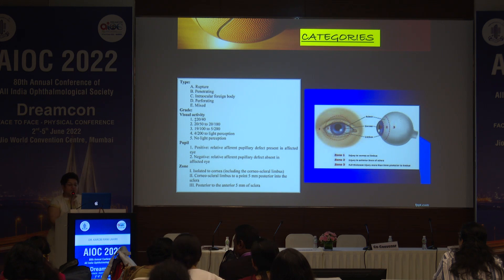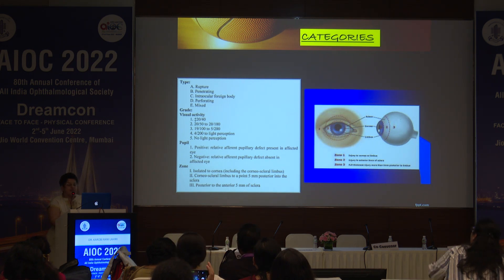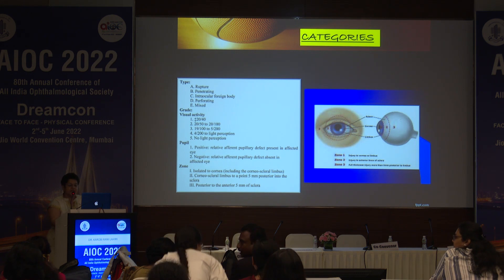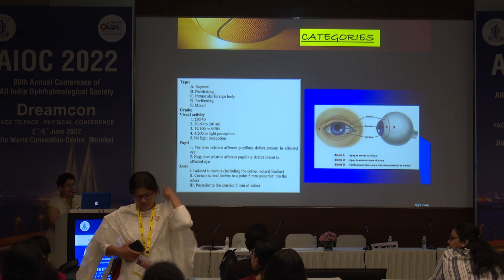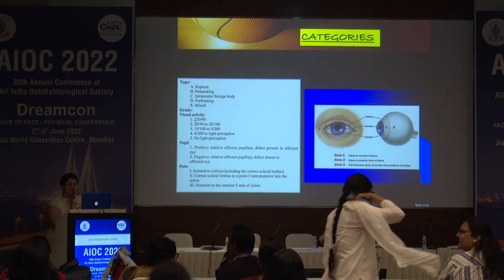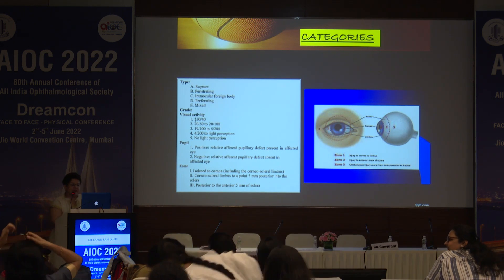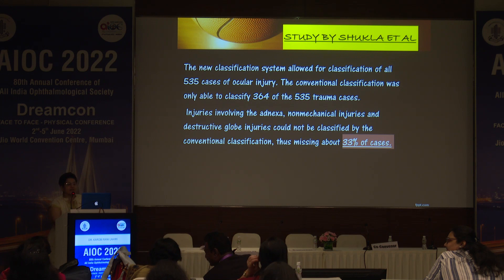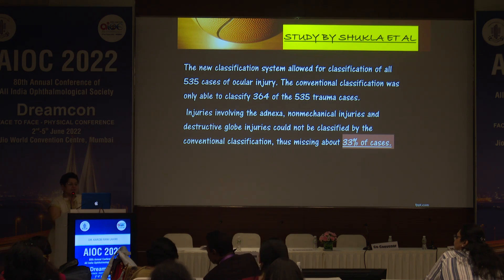When determining which part of the eye is affected, Zone 1 is an injury up to the limbus, Zone 2 extends from the limbus to 5 mm behind it, and Zone 3 covers the rest of the sclera. A study by Shukla et al. found that out of 535 cases of ocular injury, the old classification could only classify 364, meaning 33% of cases were not captured.